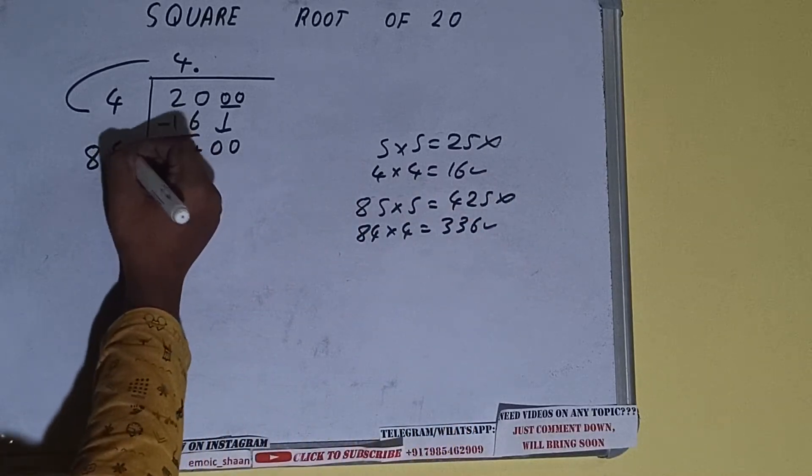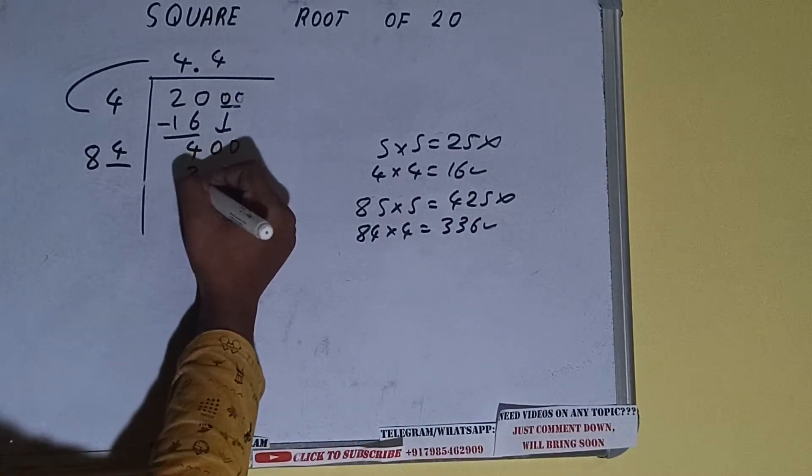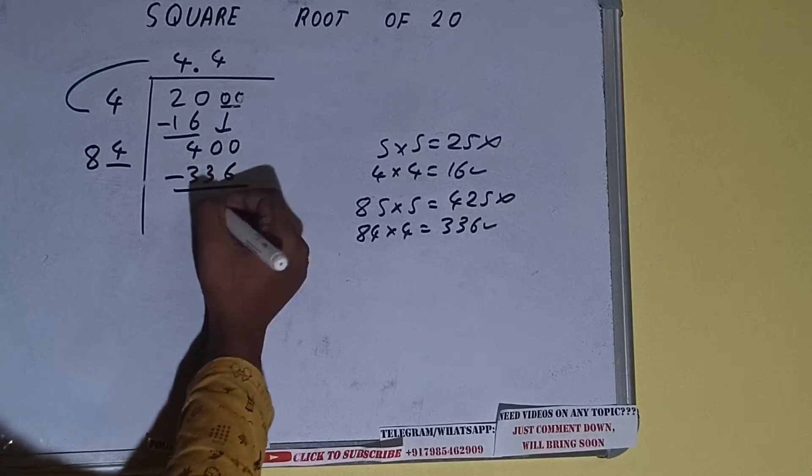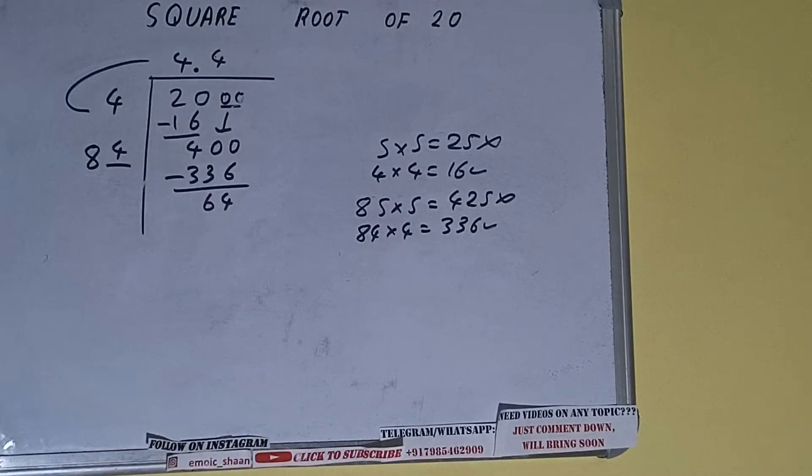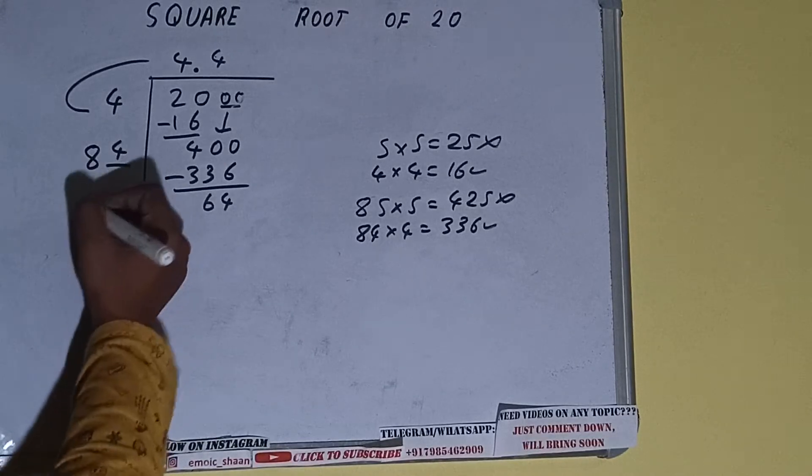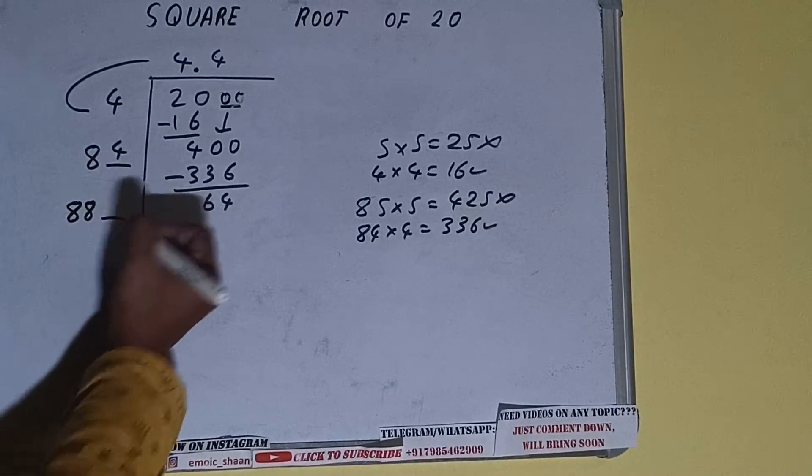So 4 here and 4 here: 336. Subtract, 64 will be left. Now 84 into 4 we did, so add both. So 84 plus 4 will be 88.